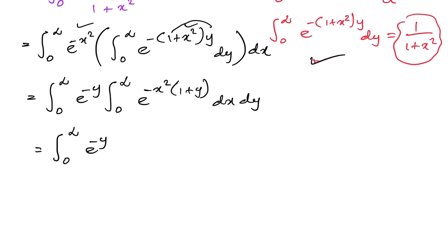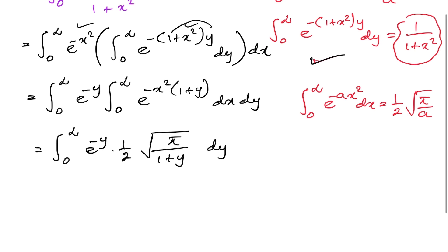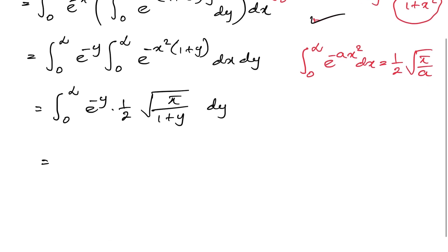Now we apply the Gaussian integral: the integral from 0 to infinity of e to the minus x squared dx equals one half times the square root of pi. So the inner integral from 0 to infinity of e to the minus x squared (1 plus y) dx equals one half times the square root of pi over (1 plus y).